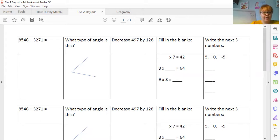Right, that's great. Excellent. I'm hoping that you can all see my screen. So the first thing we need to do is we need to talk through what we did for the first question. So I'm going to write it up. So 8,546, take away 3,271. That would be your first question. Then the next question, I'm just going to draw them on, is about an angle. Decrease 497 by 128.